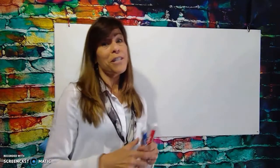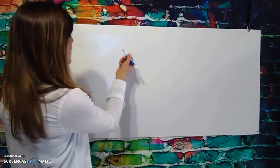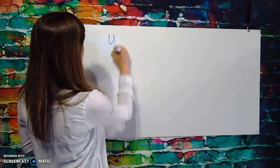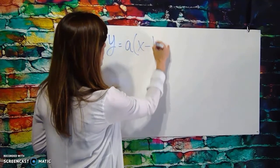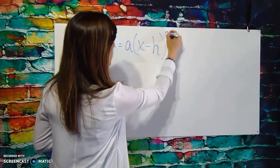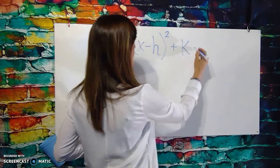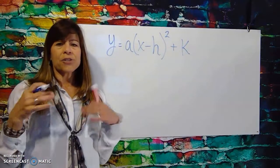All right, so vertex form, here it is. It is a quadratic in the form y equals a times x minus h squared plus k. Okay, and each of those values of a, h, and k represent something.